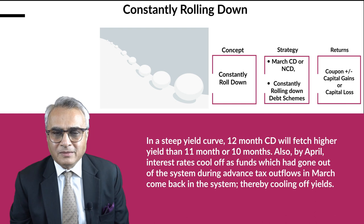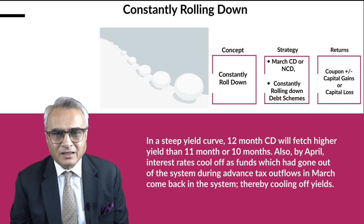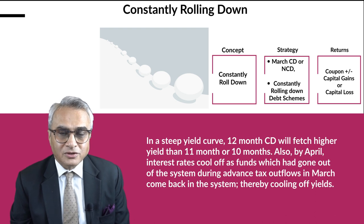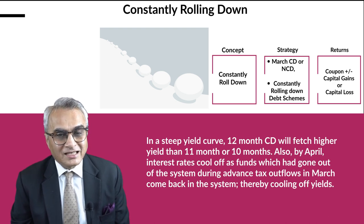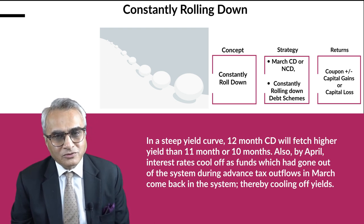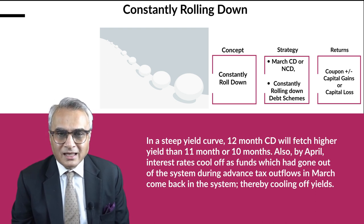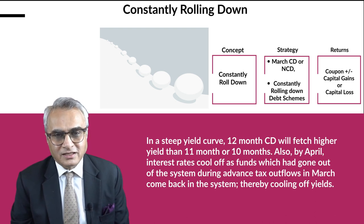On the other side, let us assume interest rates go up in the month of June — the opposite of what was expected. Something similar happened in the year 2013, where against expectations of rates going down, they actually went up. At that point, if the captured yield was 10% in March and it goes up to 12% in June or July, there may be some capital loss for the original investor.